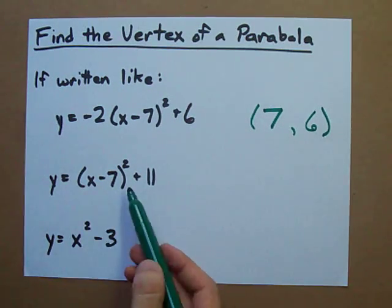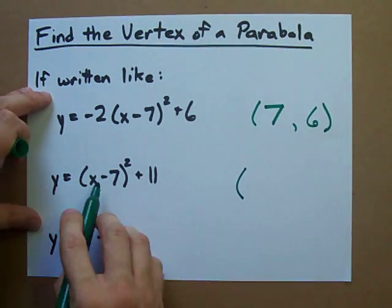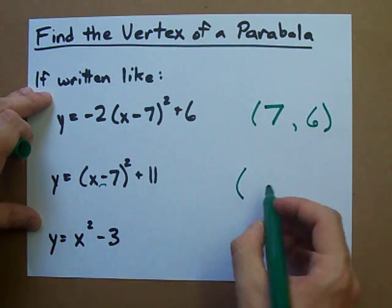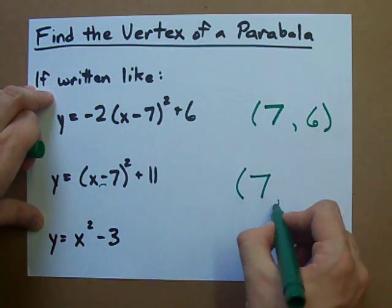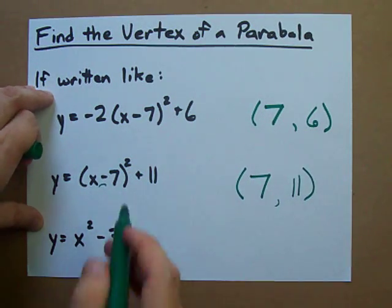Similarly, the vertex of this are, flip the sign on the inside here, positive 7. And take this as it is, positive 11. That's the vertex of that parabola.